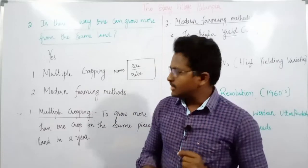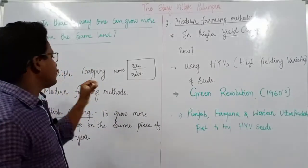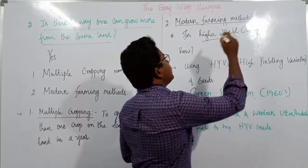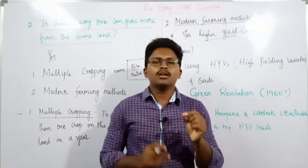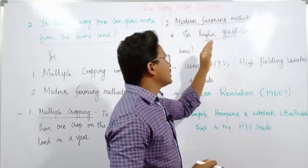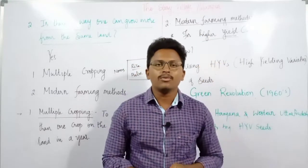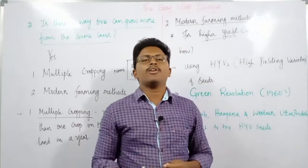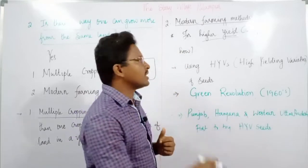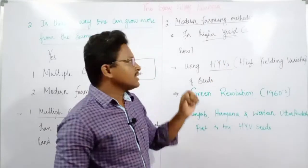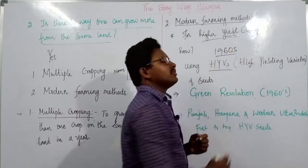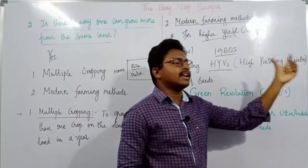With the electricity supply they have set up the irrigation system, and with that they are able to grow multiple crops in a single year. The second way to improve production on the same size of land is modern farming methods. The main aim of modern farming methods is higher yield. Yield means the output produced from a fixed size of land. Every farmer aims to increase their yield, and they can do this by using modern farming technology. In this village the farmers have used HYV seeds — High Yielding Variety seeds.